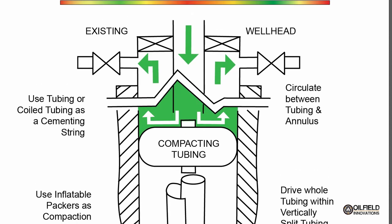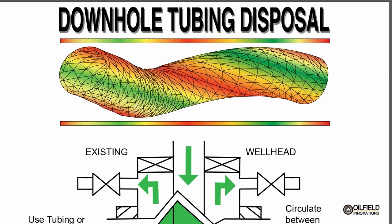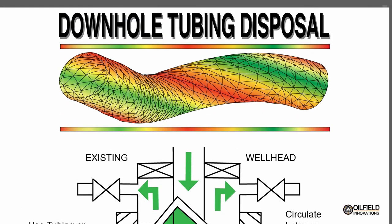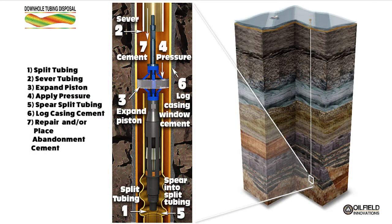The method of downhole tubing disposal, which uses off-the-shelf tooling, can save significant money by reducing the amount of resources needed for well abandonment. This graphic shows the steps of downhole tubing disposal.